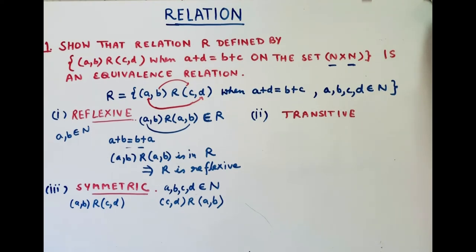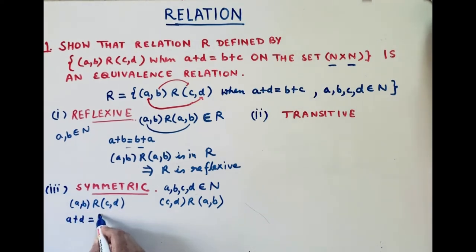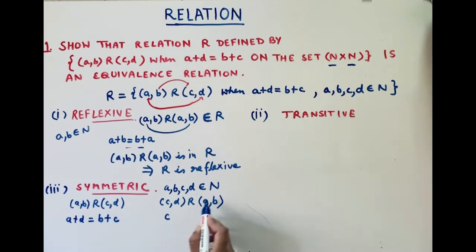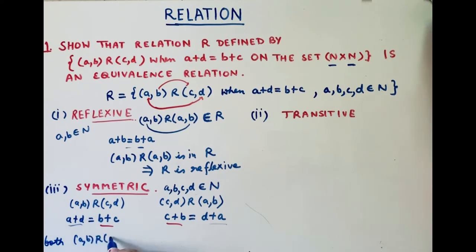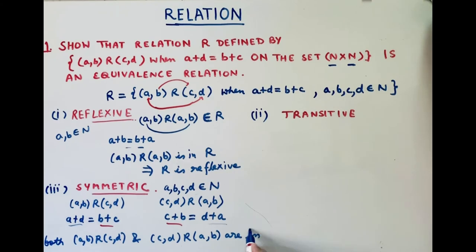We know that (a,b) R (c,d) can be written as a plus d equals b plus c. Now for checking (c,d) R (a,b), we write c plus b equals d plus a. The sum of a plus d and d plus a are the same, and the sum of b plus c and c plus b are the same. So both (a,b) R (c,d) and (c,d) R (a,b) are in relation R. Therefore R is symmetric.